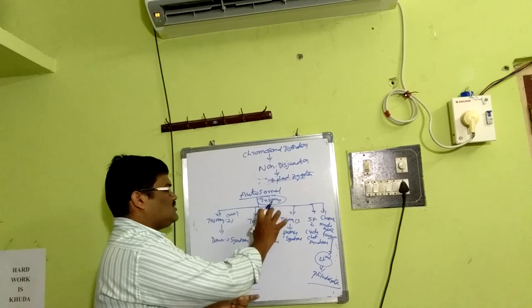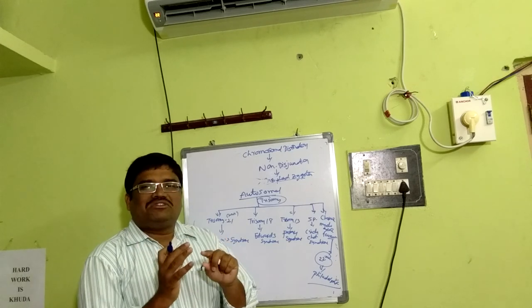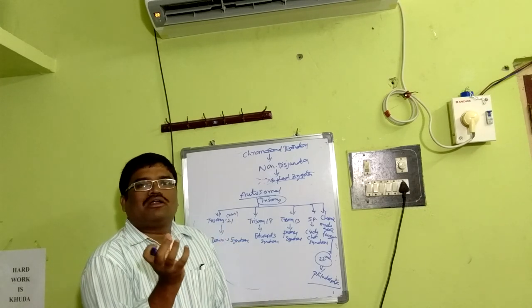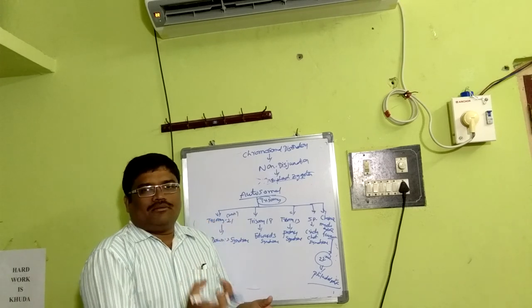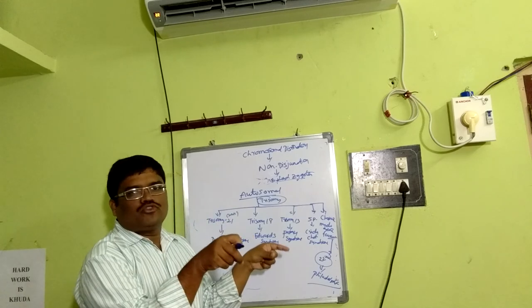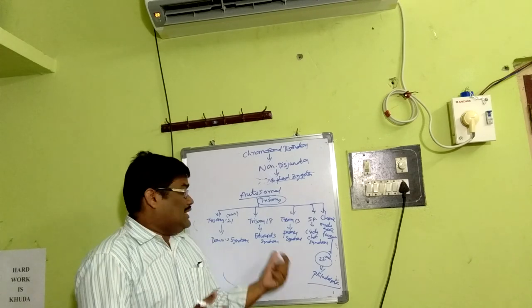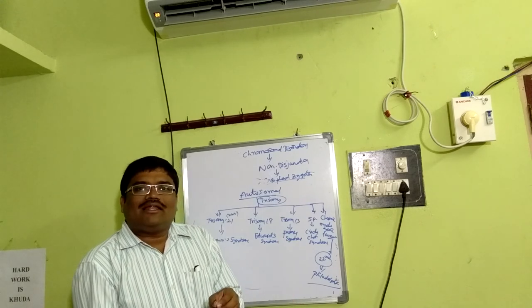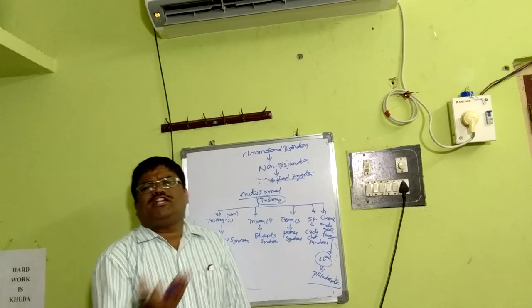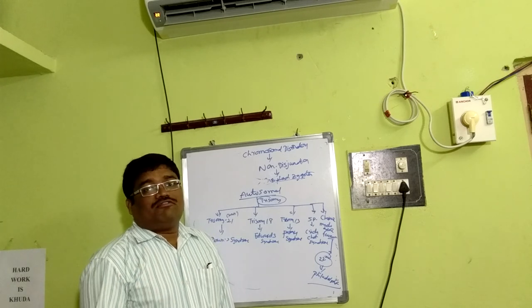Down syndrome (trisomy 21): an extra chromosome is added to the existing 21st pair. Affected children show physical and intellectual abnormalities — a small, round-shaped skull and partially opened mouth. Edward syndrome (trisomy 18): most affected individuals may survive for only days or weeks, or may even die at the fetal stage. Those who do survive have severe health complications including kidney and heart malfunction.